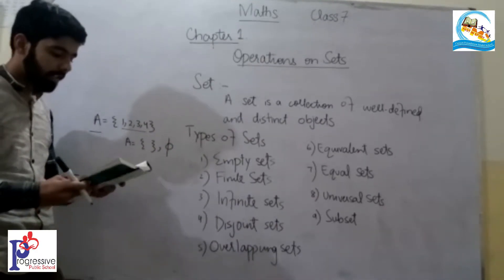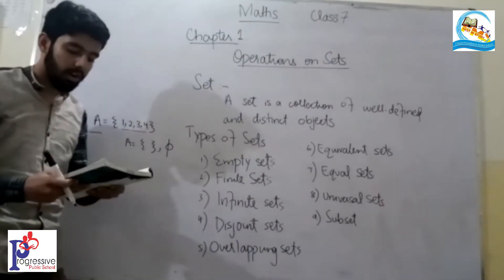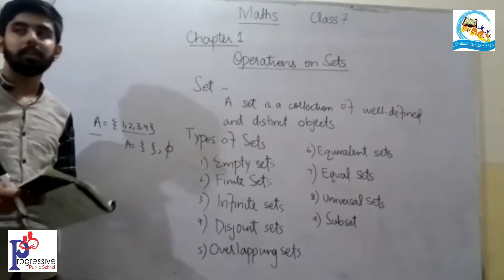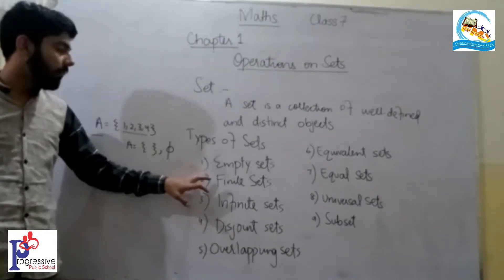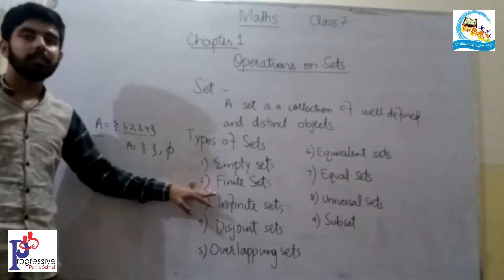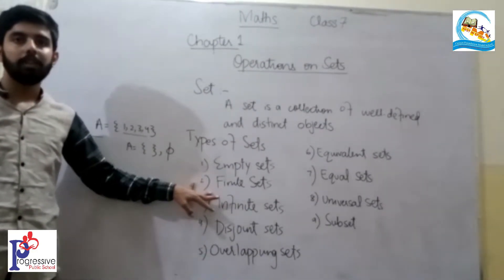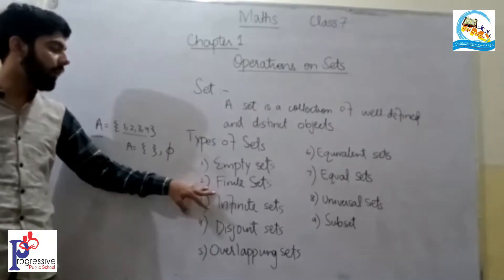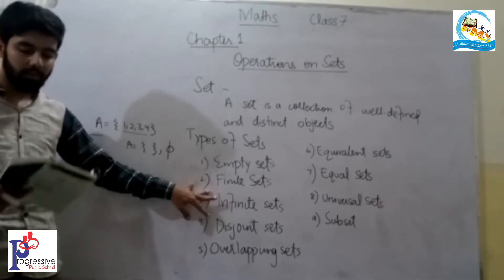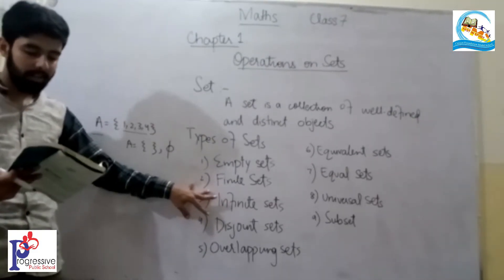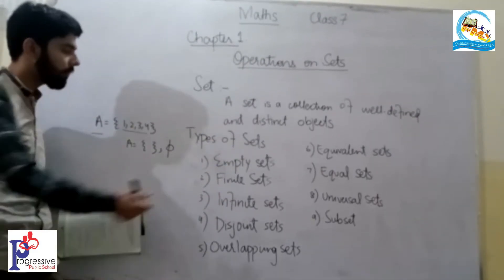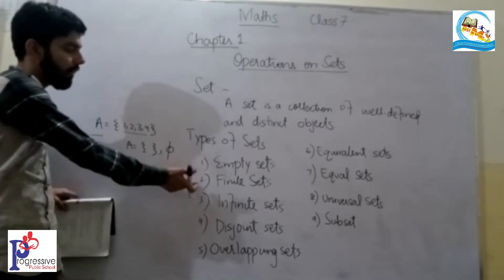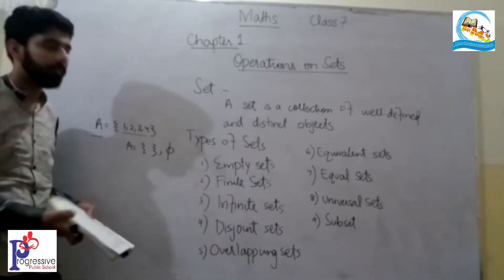Next is finite set. A finite set is a set containing only a finite number of elements — for example, 4 numbers, 5 numbers, or 6 numbers.